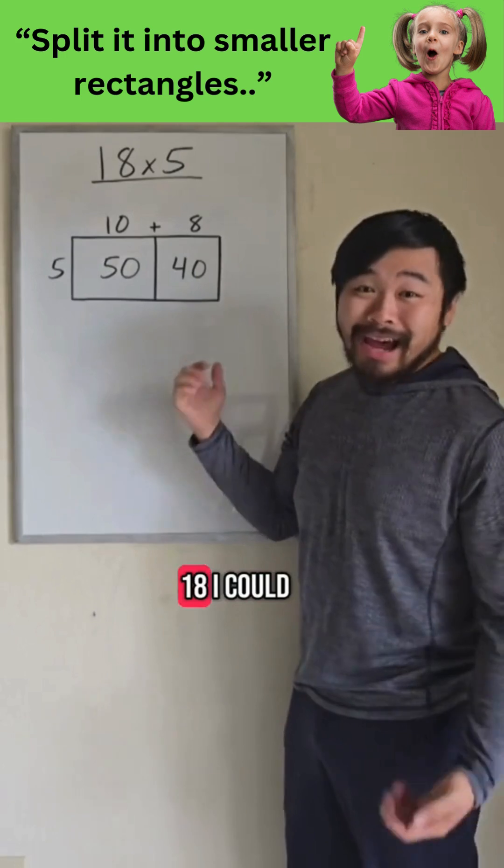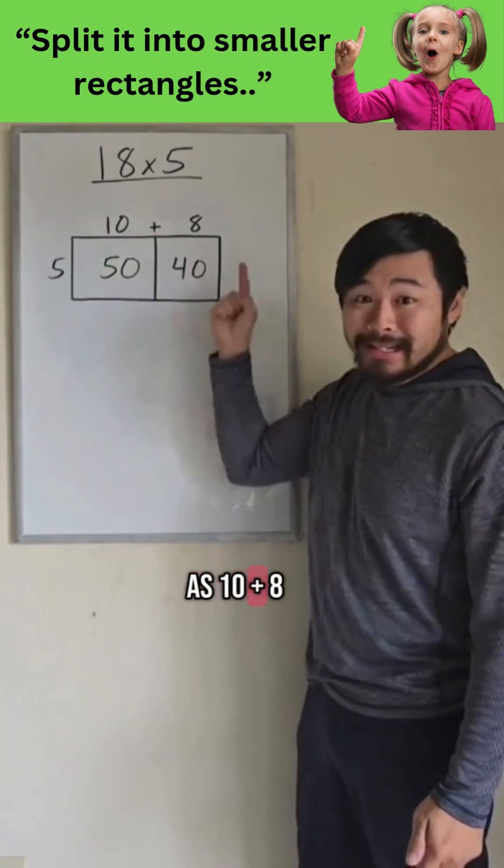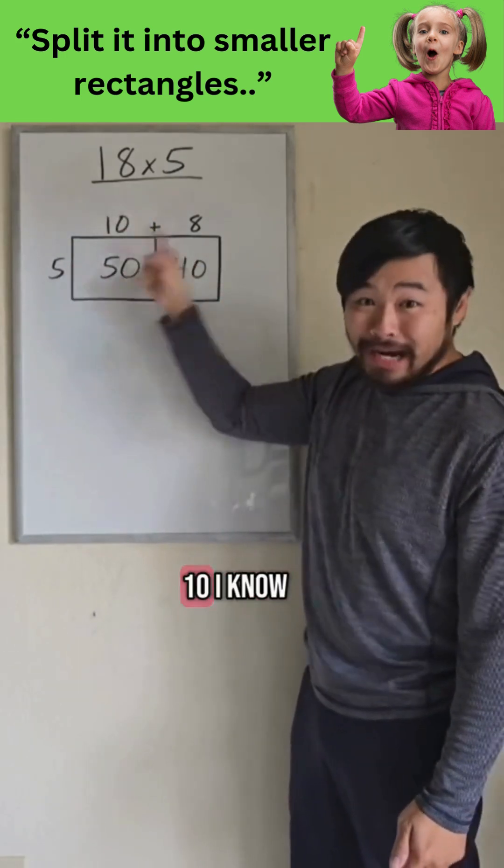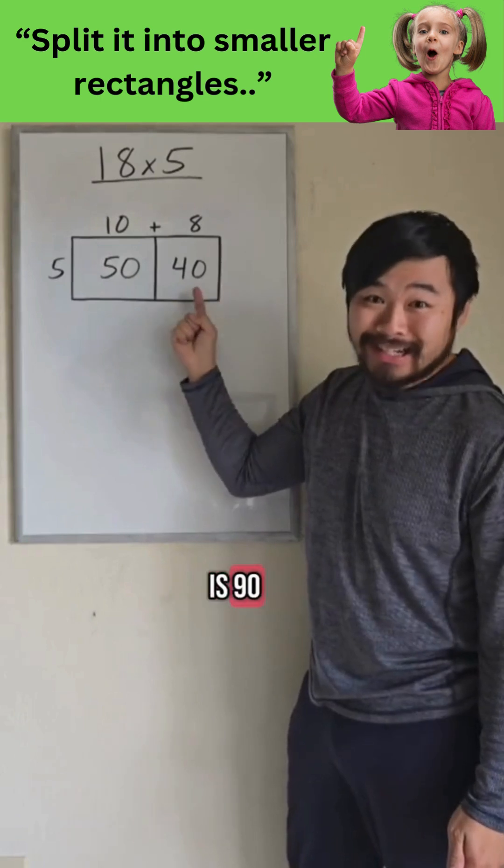If I have a length of 18, I could break it up as 10 plus 8. I know 5 times 10, I know 5 times 8, so I see that the answer is 90.